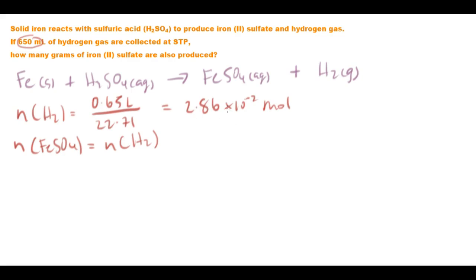Which is 2.86 × 10⁻² moles. So easy here. Now the mass of our FeSO₄ is going to be the number of moles, which is 2.86 × 10⁻² mole, times its molar mass, which is about 151.92 grams per mole. And that should give us a mass of approximately 4.34 grams to three significant figures. And there we go, problem solved.